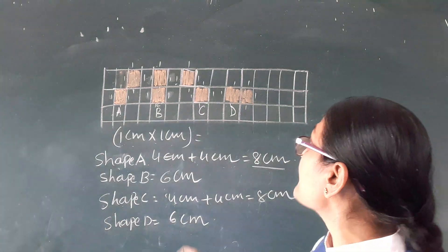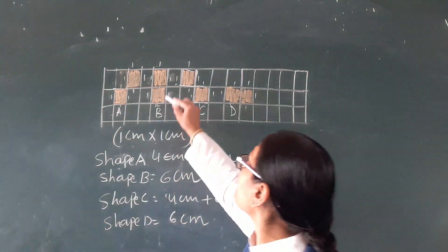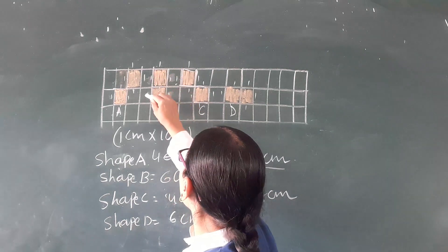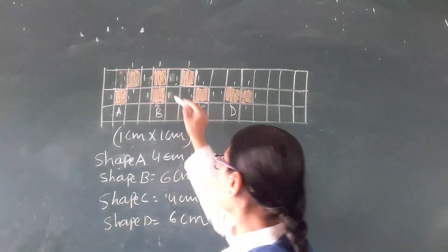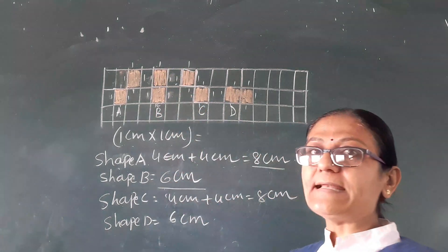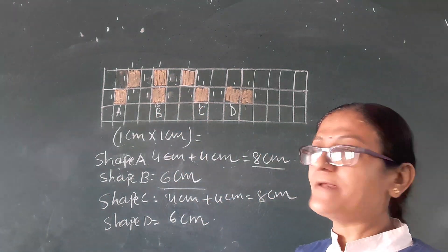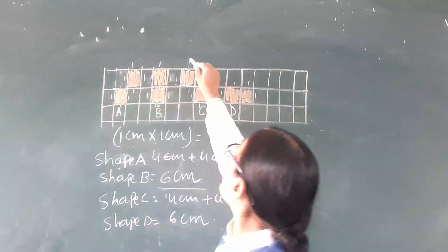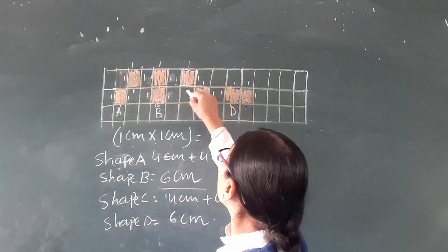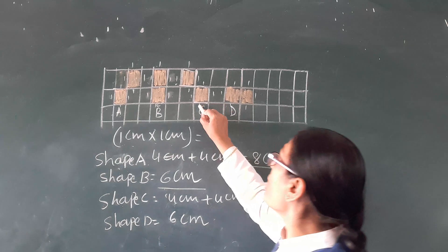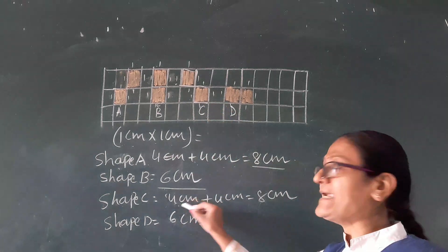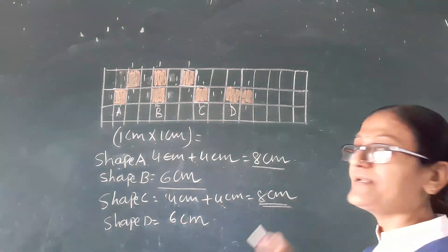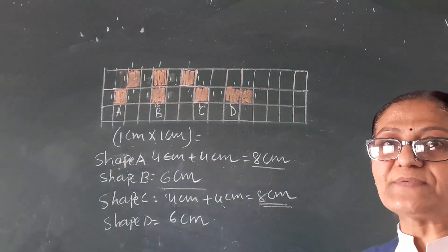Now shape B has one diagonal line. Counting the boundary sides: 3 plus 3, there is 6 cm for shape B. For shape C, counting again: 4 cm plus 4 cm, 8 cm is there for shape C.